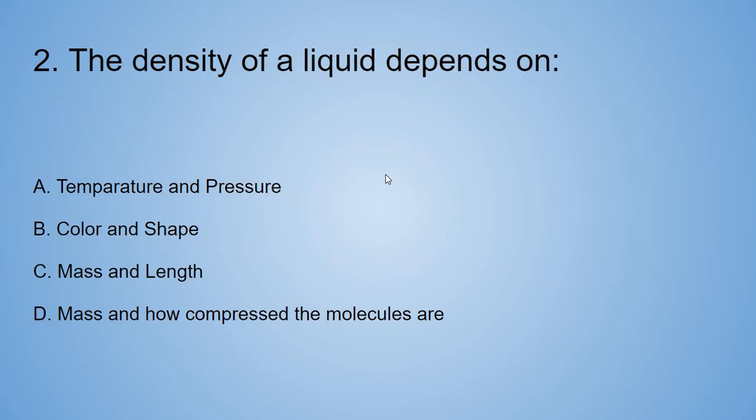Number 2. The density of a liquid depends on... A. Temperature and pressure. B. Color and shape. C. Mass and length. D. Mass and how compressed the molecules are.